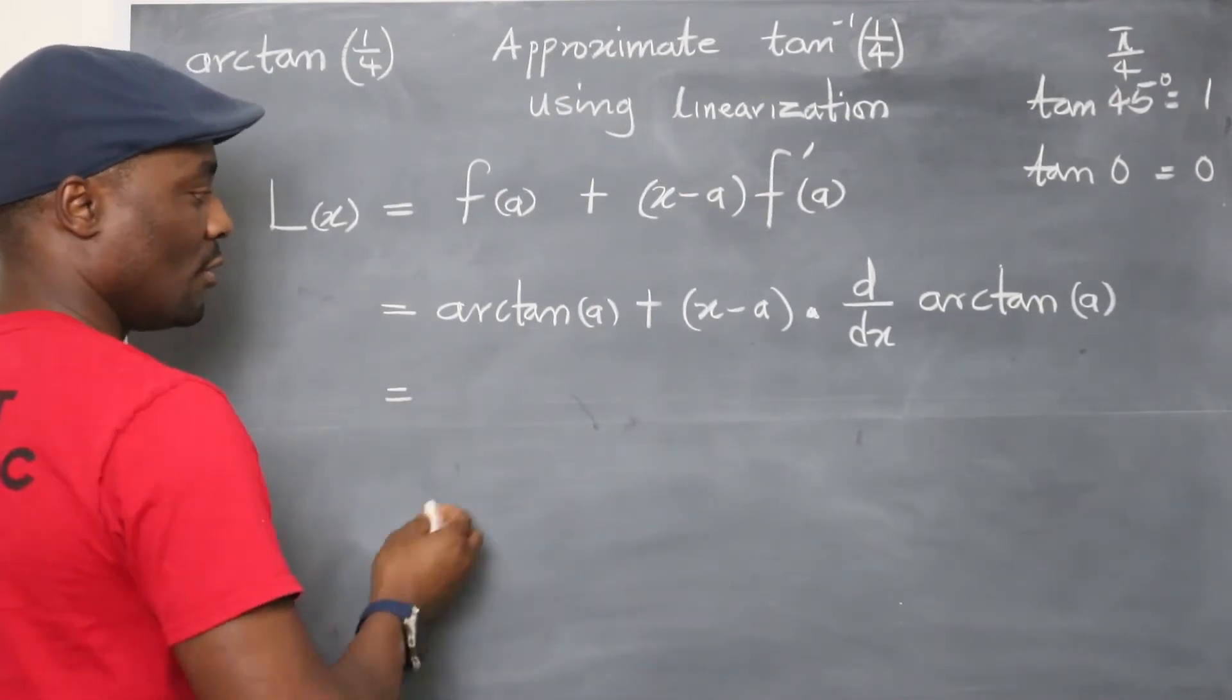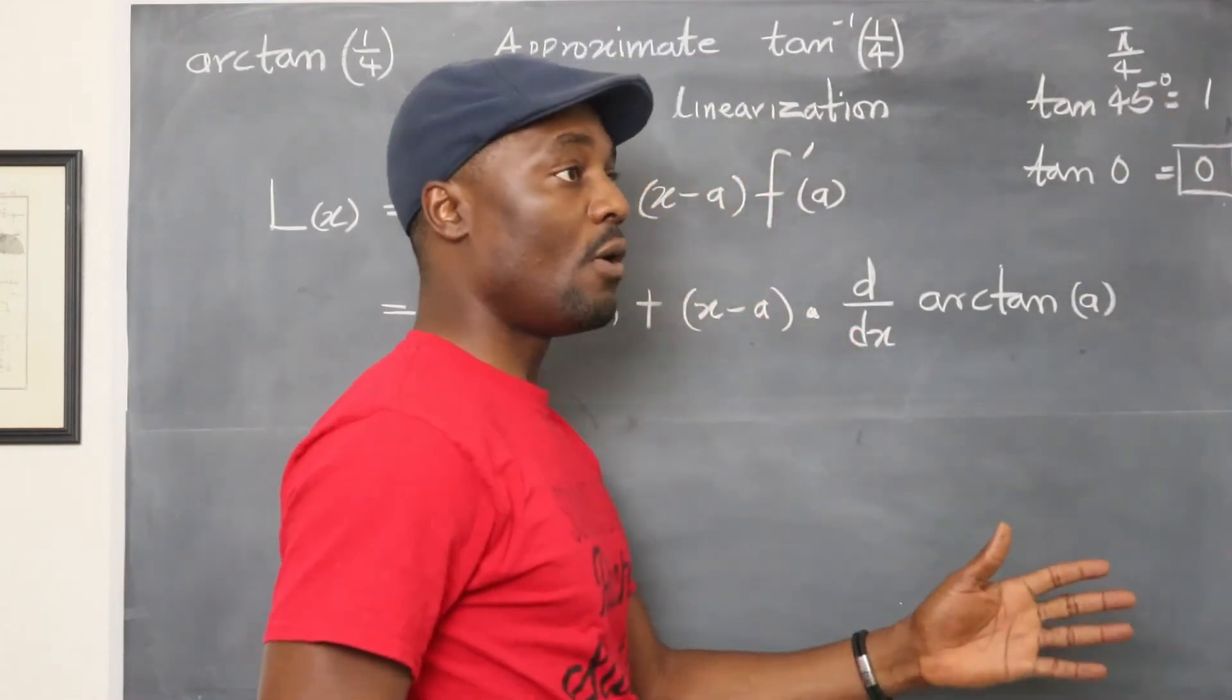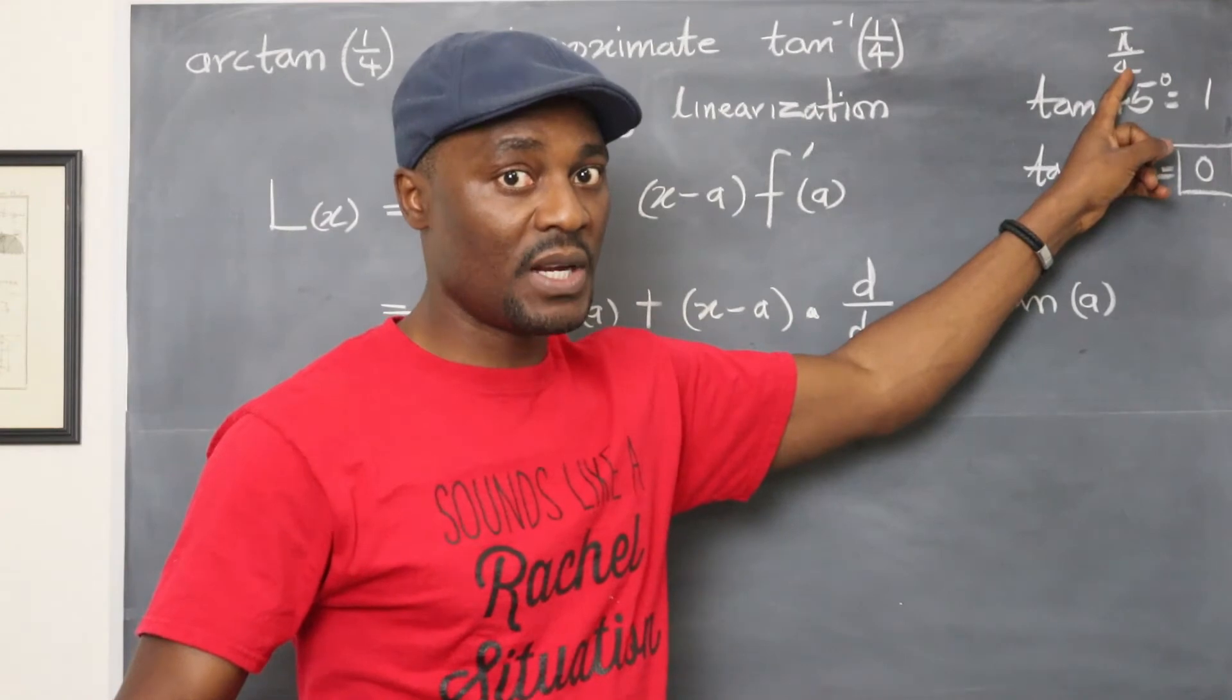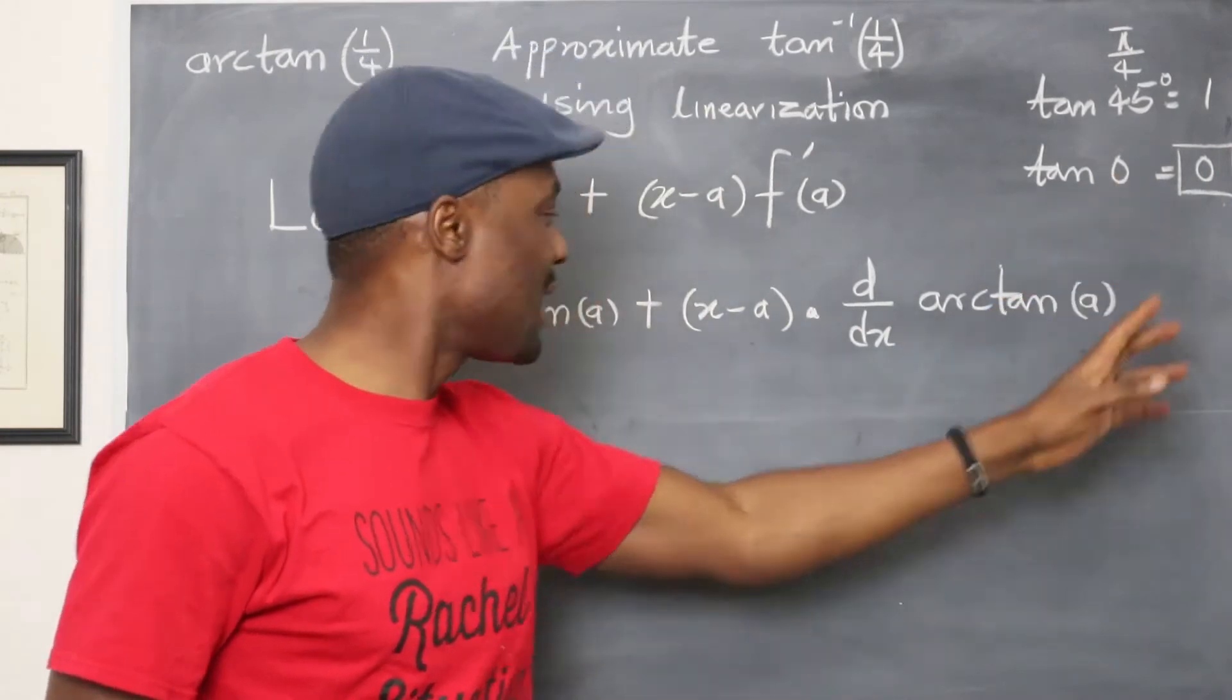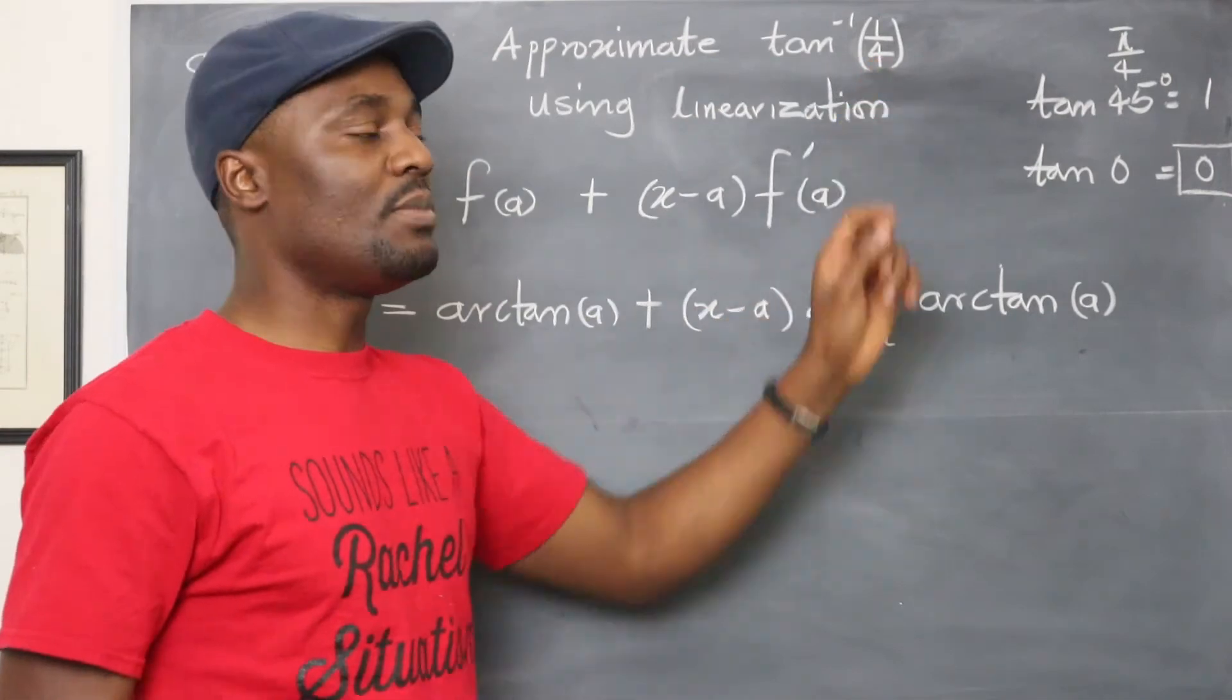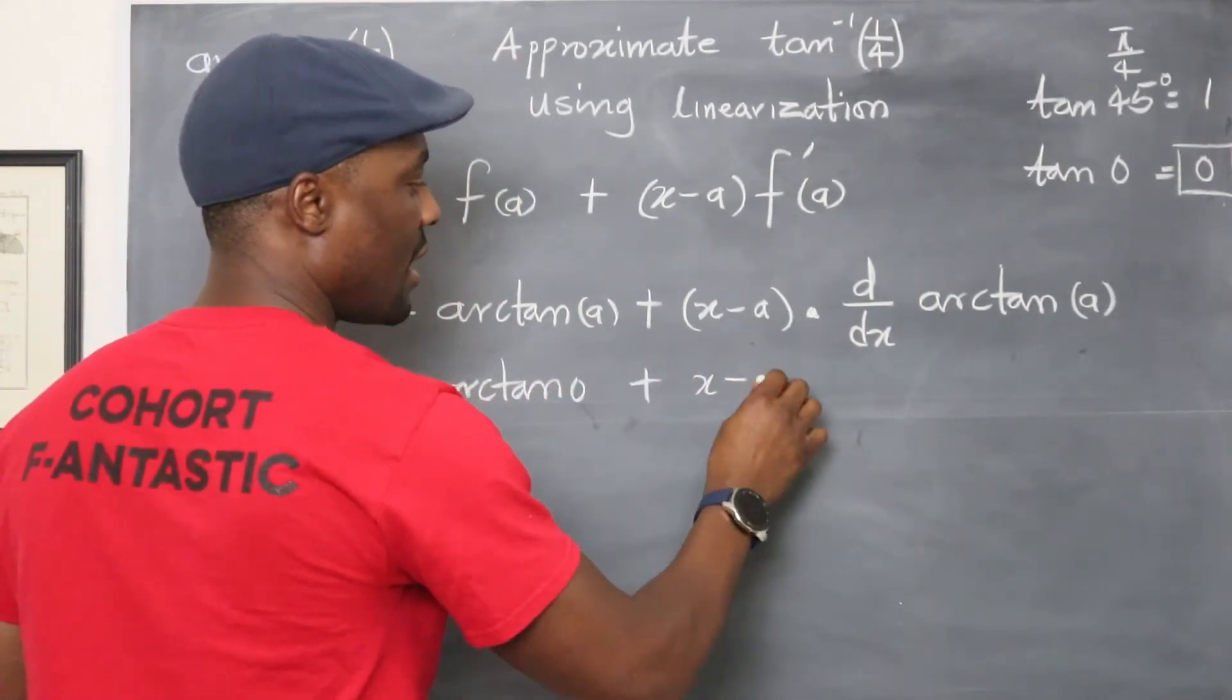So the next thing to do is arc tan of a. Now, what number are we choosing? I said we're going to choose zero because zero is easy for us to know what the arc tan of zero is. So the arc tan of zero is zero, the arc tan of one is π over 4 if you're working in radians, which mathematicians work in, or what you call 45 degrees. So arc tan of zero is zero, so we can easily trace it back because that's the inverse function of tangent.